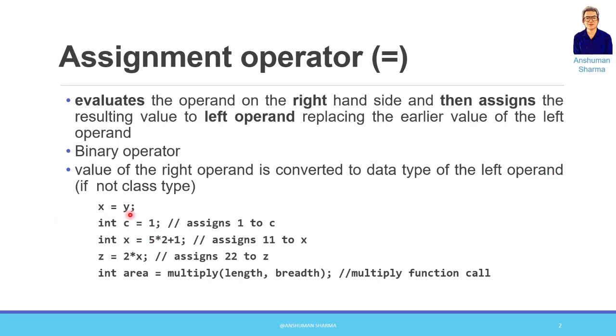As you can see here, the assignment operator uses a single equal-to sign. You will write statements like this whenever required. You should focus on the fact that the right-side value will be converted to match the data type of the left operand — this conversion happens automatically and implicitly. Remember that the right-hand side can hold values, expressions, or even a function call.